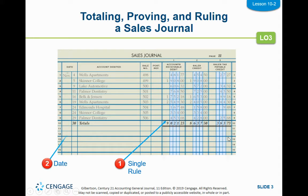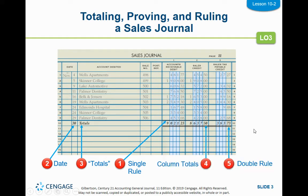You start with your single rule, write the date, then write the word totals. Remember you have to have that S on Cengage — it will count it wrong if you don't put the S on there because there are multiple totals. Do your column totals and then double rule. When you do your column totals, it's always a good idea to add your two sales columns together to make sure they equal your debit column.